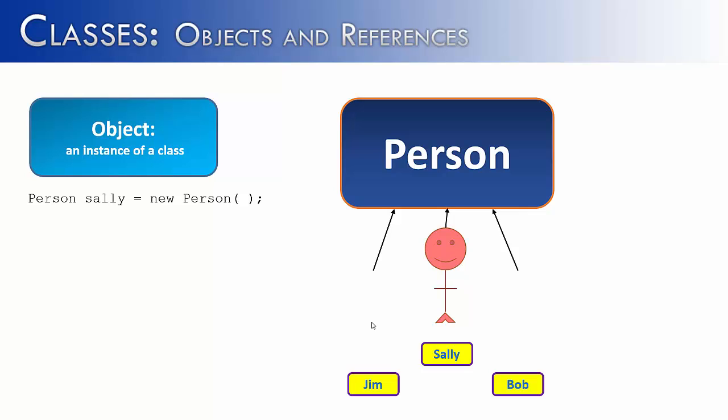So we created Sally. And let's see how we could create other objects. We would use the same format, except for this time I'm calling my object Jim. And the last object I'm calling is Bob. Remember, Sally, Jim, and Bob are not persons, but rather are memory references that are pointing to where these three person objects are located in memory.